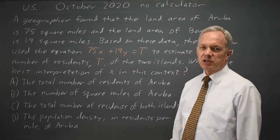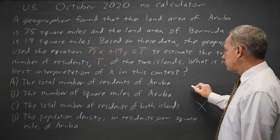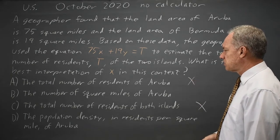you're going to get something a whole lot bigger than the total number of residents of the two islands. So total residents does not make sense.